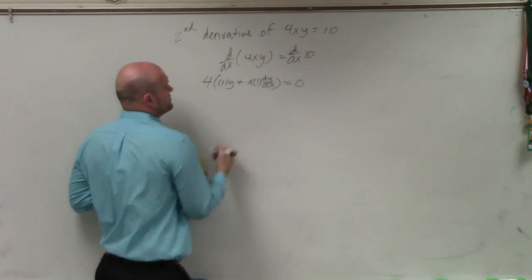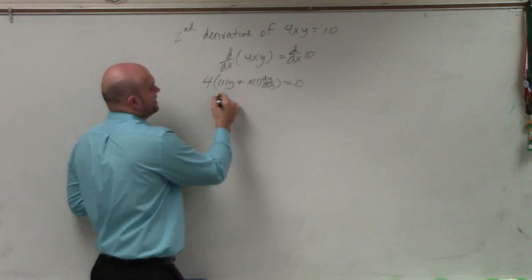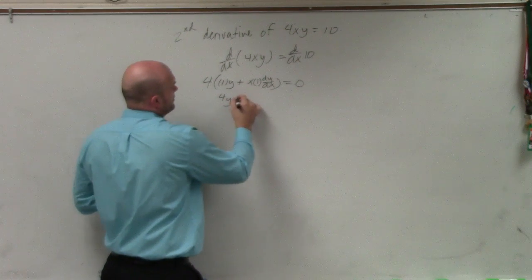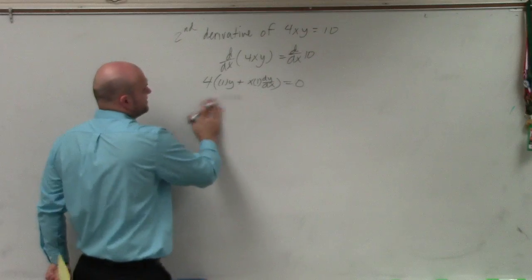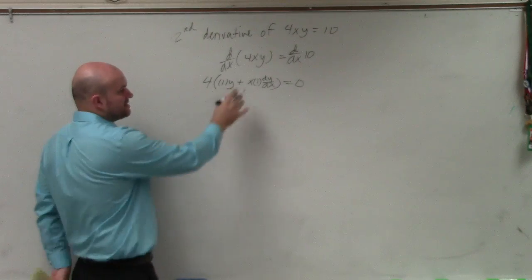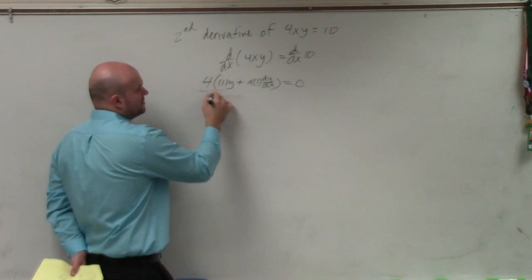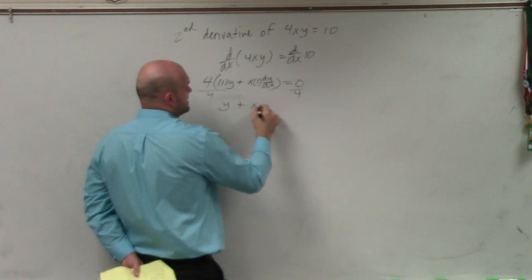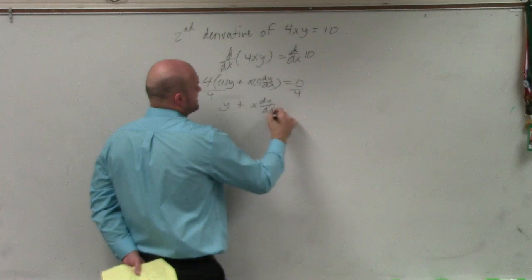equals 0. I can distribute that 4 back in. So I'm really left with a 4y plus. Actually, don't even need to distribute the 4 back in, because I want to solve for dy dx. So let's divide that 4 on both sides. So I'm left with y plus x dy dx equals 0.